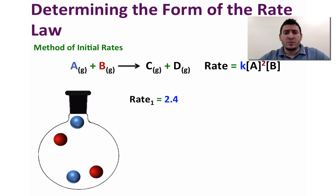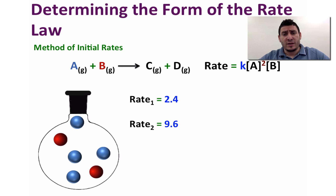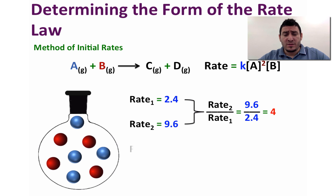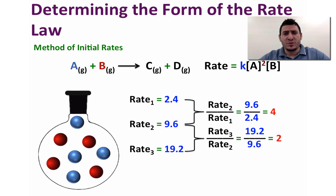Initially the rate equals 2.4. If we double the concentration of A, the rate becomes 9.6. Dividing 9.6 by 2.4 gives 4 — so doubling the concentration of A quadruples the overall rate. Now, if we double the concentration of B, the rate becomes 19.2. The ratio of 19.2 to 9.6 is 2, which means doubling the concentration of B doubles the rate, because it is a first order reaction in B.